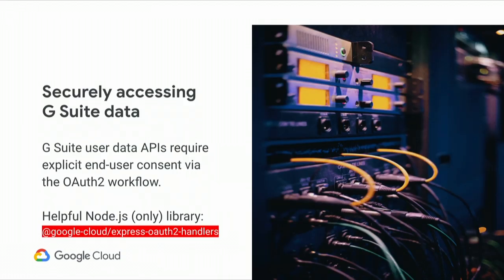Before we go further, we really want to mention that accessing G Suite data requires explicit approval from end users. G Suite APIs, along with other Google APIs, are protected by the industry-standard OAuth 2 workflow. Normally you have to perform this workflow manually to get access, but here we use a really convenient Node.js library built by the team to help us automate the process.